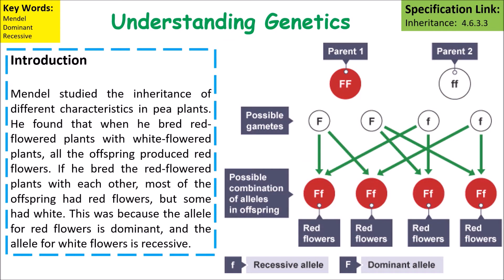Mendel studied the inherited characteristics in pea plants. He found that when he bred red flowered pea plants with white flowered pea plants they would produce mainly red flowered offspring. We can see the parents are red and white, and therefore all offspring are red. We now know this is because the gene for the red flower is dominant and the gene for white flowers is recessive — so if you have just one dominant gene in each of those offspring, all four of them would be red.